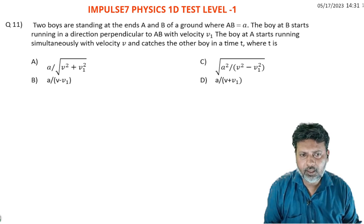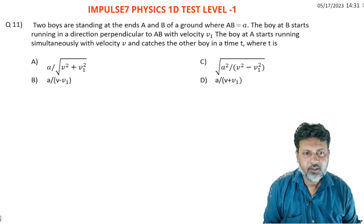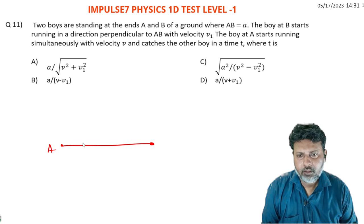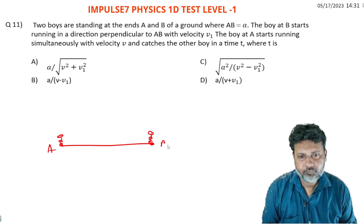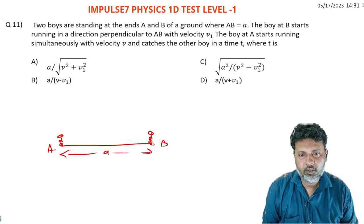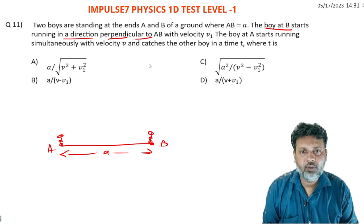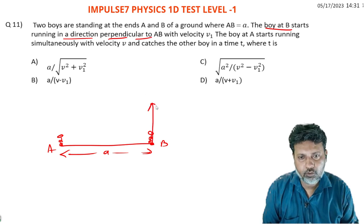Let's set up the figure. We have point A here and point B here, and the distance between them is a (small a). AB is the distance. B starts running in a direction perpendicular to AB - so perpendicular means at 90 degrees.